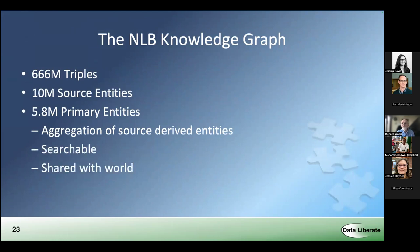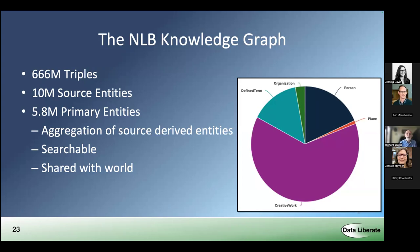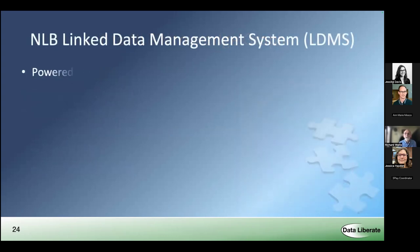We've ended up with the National Library Board knowledge graph which currently sits at 666 million triples, 10 million source entities, and 5.8 million primary entities — which are aggregations of the source-derived entities — which are searchable and shared with the world. Looking at the breakdown in a pie chart: the purple area is creative works, the black area is persons, the green area is organization entities, orange is place entities, and the remainder are what we call defined terms — subjects and topics within the system.